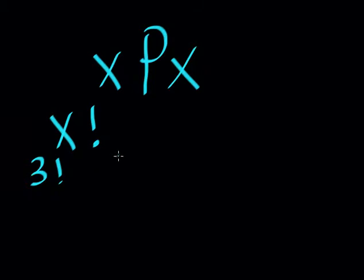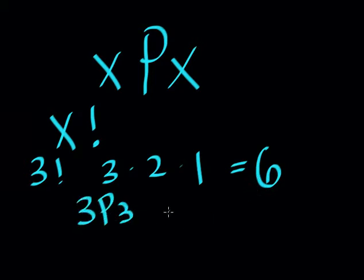Notice that three factorial, or three times two times one, is also equal to six. The same as three permutations of three equaled six in our last example. If you're confused about factorials, you can watch my other segment on them.